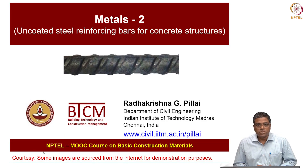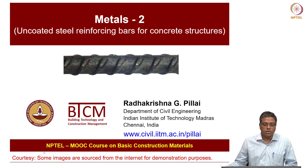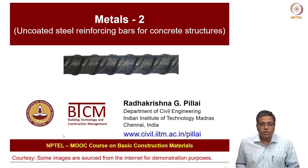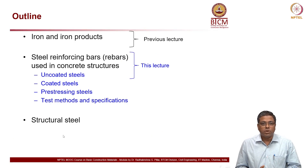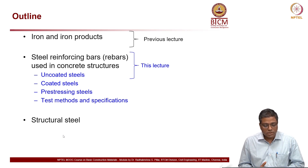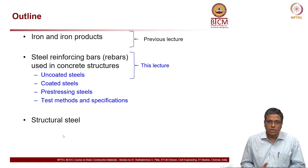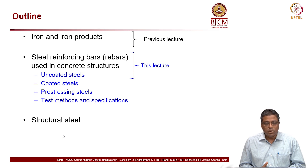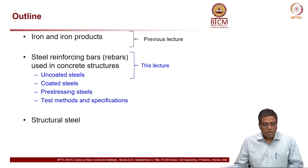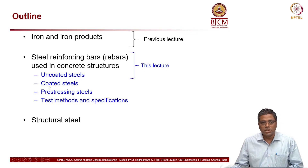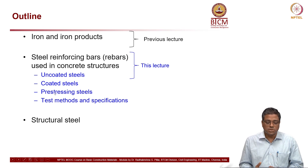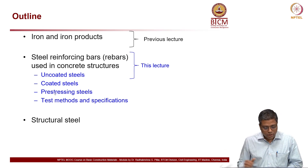Welcome to this lecture as part of the course on basic construction materials. In this lecture, we will look at uncoated steel reinforcement. This is the outline of this module on metals. In the previous lecture, we looked at iron and iron products and how they are manufactured, cast iron etcetera. Today we are going to look at steel reinforcing bars. In particular, uncoated steels we will cover today, and then coated steel, pre-stressing steel and some test methods and specifications we will cover in the following lecture.